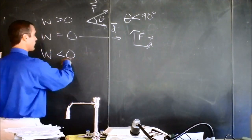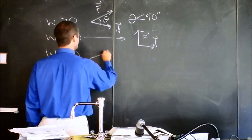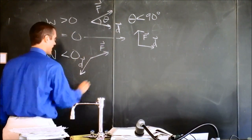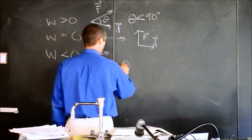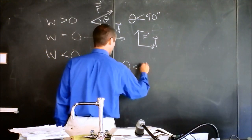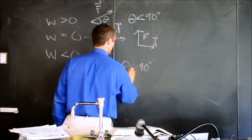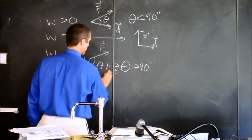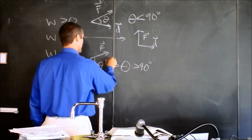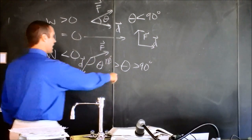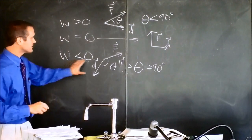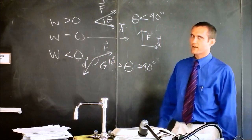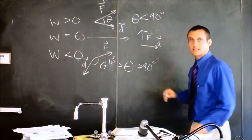And finally, we could look at the work being negative. That would be the case if the force is this direction, and the distance that you're going is that direction. So if theta is less than 90 degrees and less than 180 degrees, then we've got ourselves negative work because this force is acting against the motion.